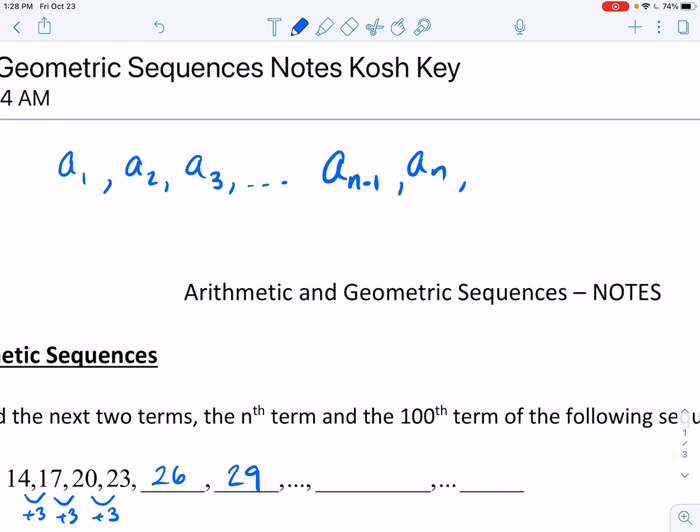And the term that came right before the nth term, well, the term that came right before the 100th term is the 99th term. And so what we did to get from 100 to 99 is we subtracted 1. So this is the a sub n minus 1 term. I call it the n minus 1th term. And then the term that would come right after the nth term is the a sub n plus 1.